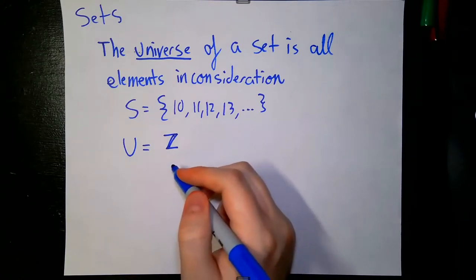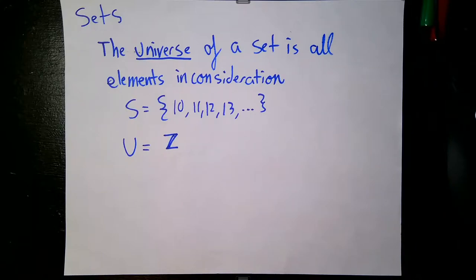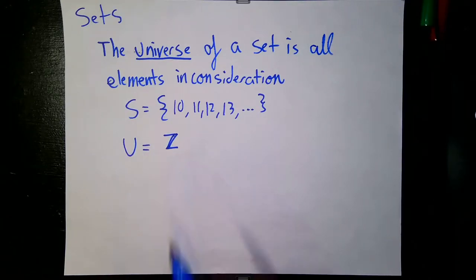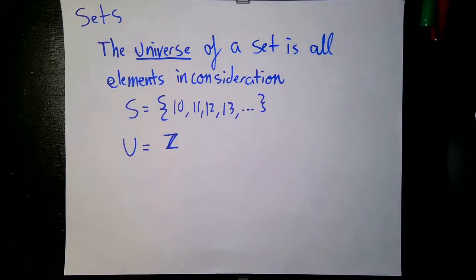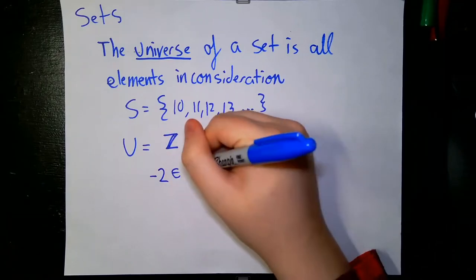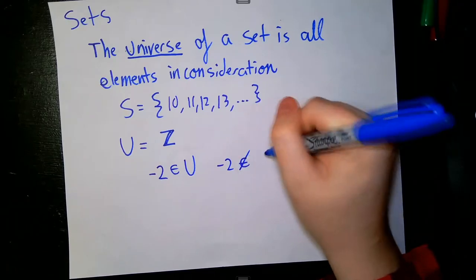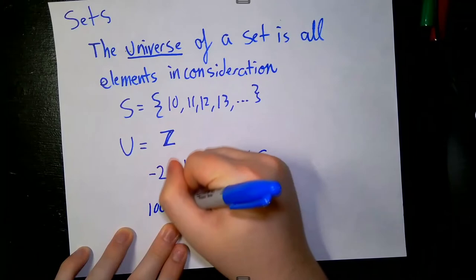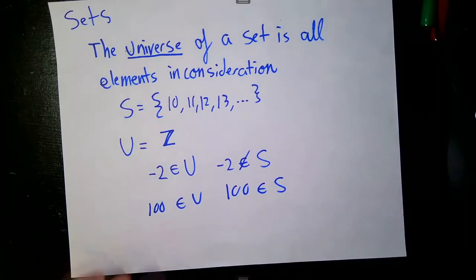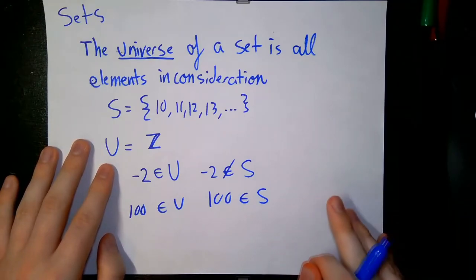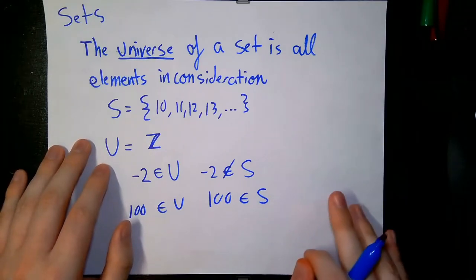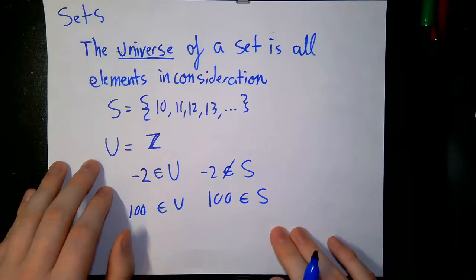I arbitrarily chose the integers. It doesn't need to be anything specific, so long as we choose something that is larger than our set. I choose the integers because it will be easy — we won't have to worry about decimal points or real numbers that aren't integers. We can take elements from our universe and see if they are in S or not. For example, negative 2 is in the universe but not in S. And 100 is in the universe and also in S. Basically, the universe is every mathematical object we're considering in our context of working with specific sets, whether they are in those sets or not.